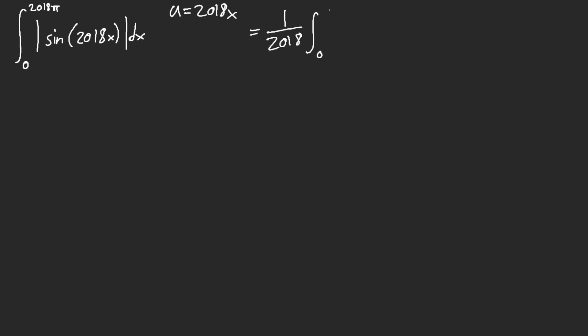So, now you just have 1 over 2018. This is 0, and then you have 2018 squared pi. And then, now it's just sine of u du.